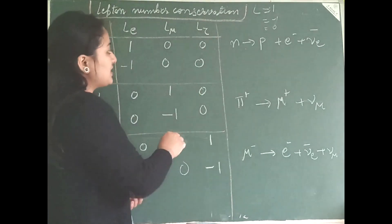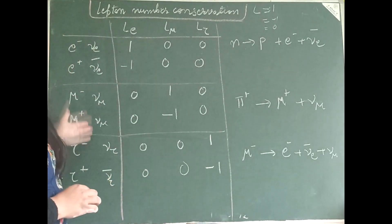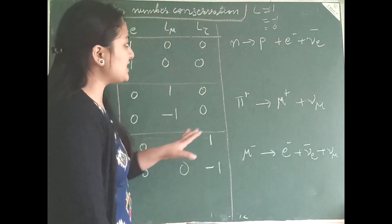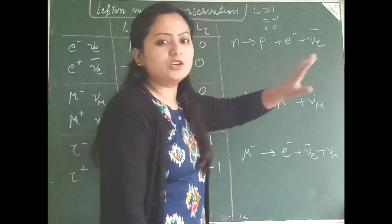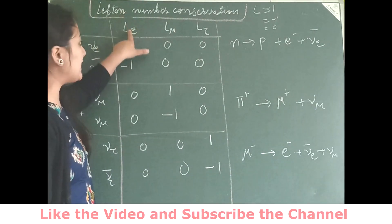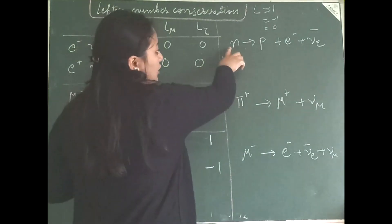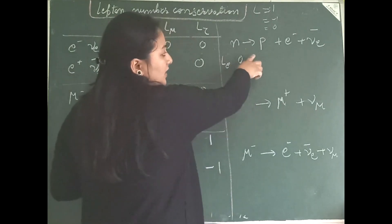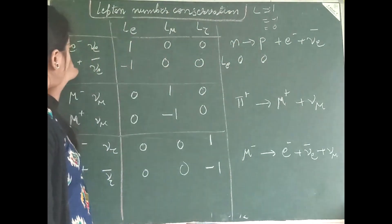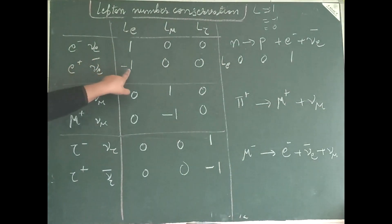Let us look into these three examples. Neutron is not a lepton, so its lepton number is 0. We have electrons and electron neutrino here, so we should be looking at the electron lepton number conservation. The electron lepton number for neutron is 0, for proton it is 0, and for electron it is 1. For the electron anti-neutrino, it is minus 1.